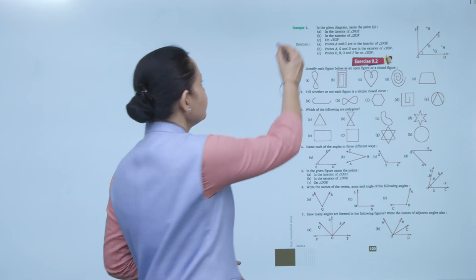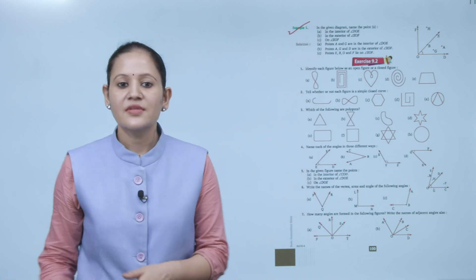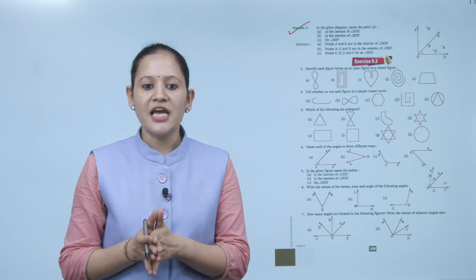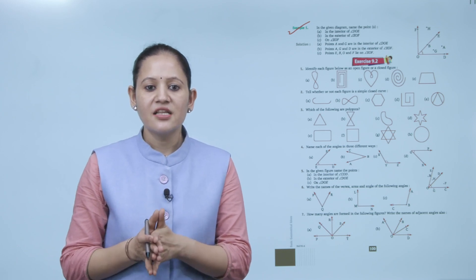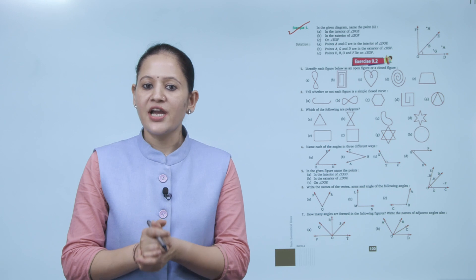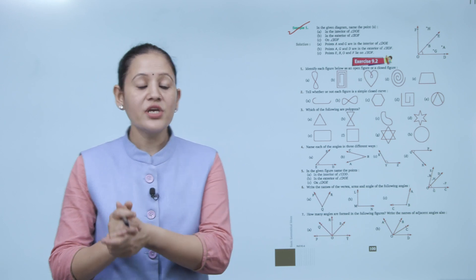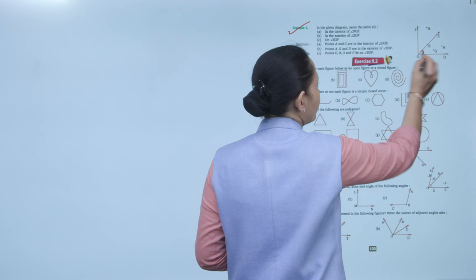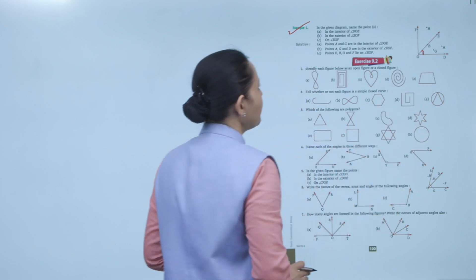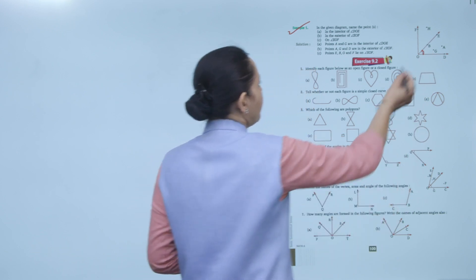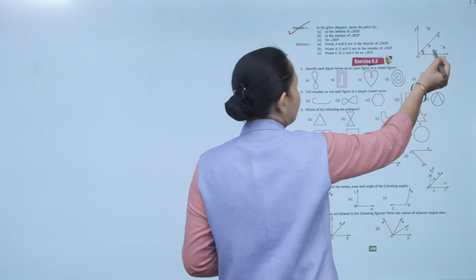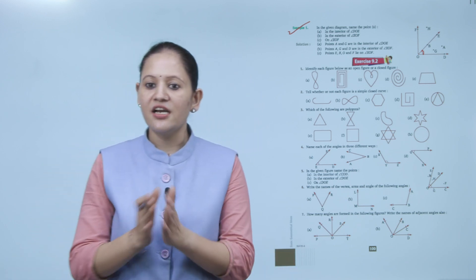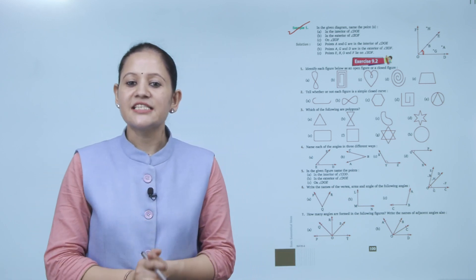Example: in the given diagram, name the points in the interior of angle DOE. The interior of angle DOE — looking at the figure, points A and G are in the interior of angle DOE.